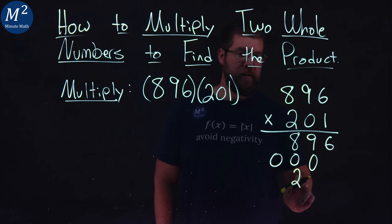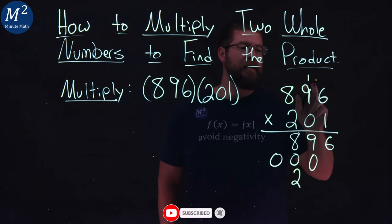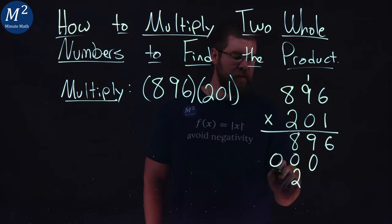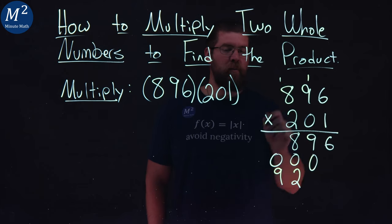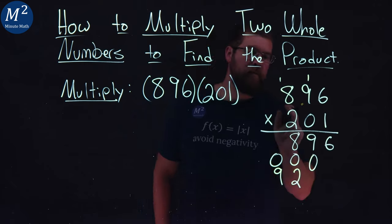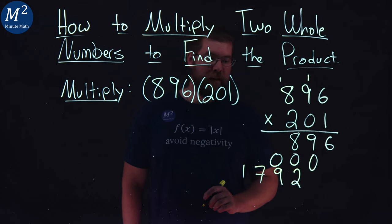2 times 9 is 18 plus 1 gives me 19. Write 9, carry the 1. And 2 times 8 gives me 16 plus 1 is 17. 7 here and a 1 right there.